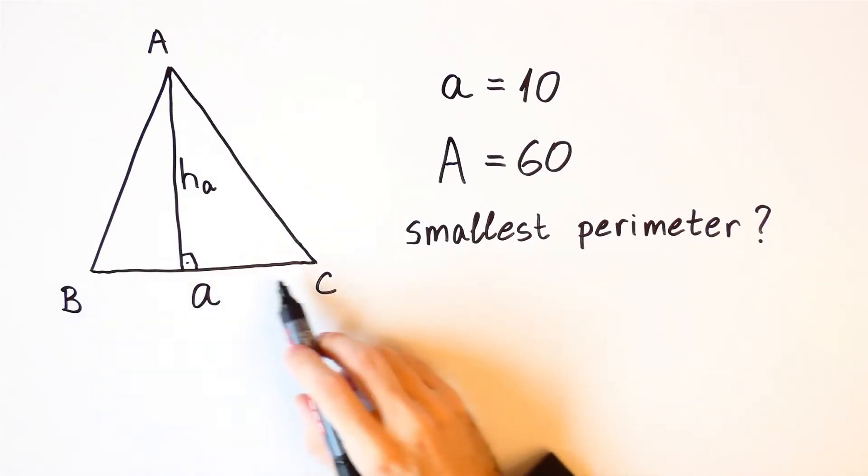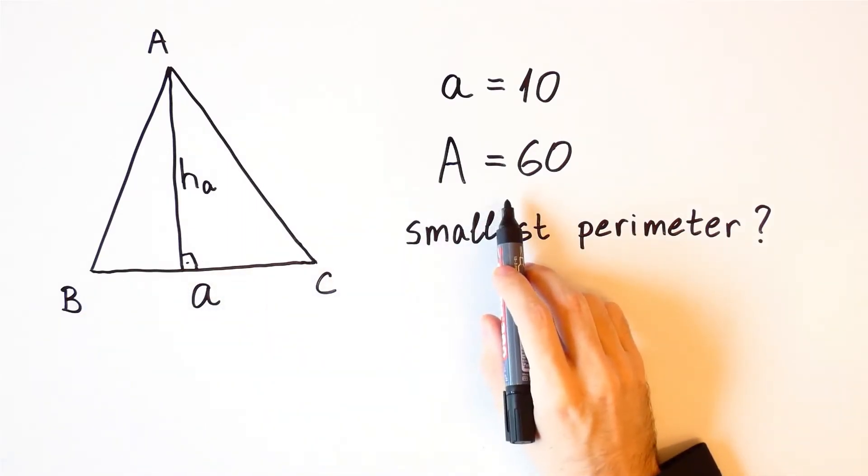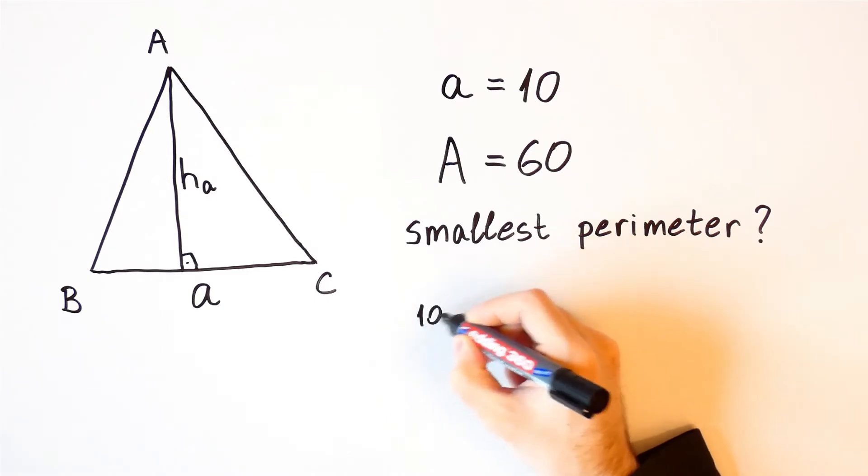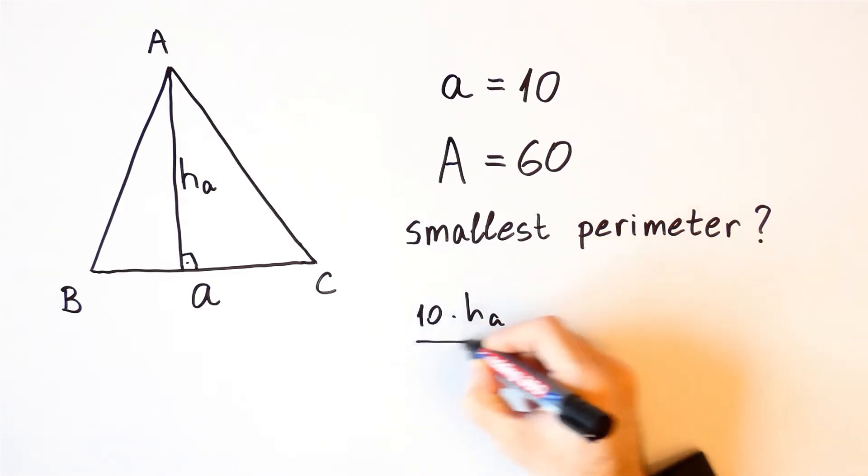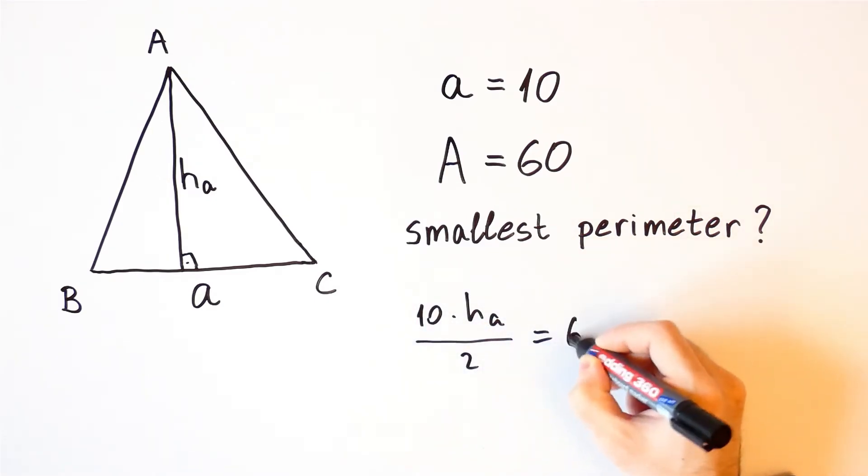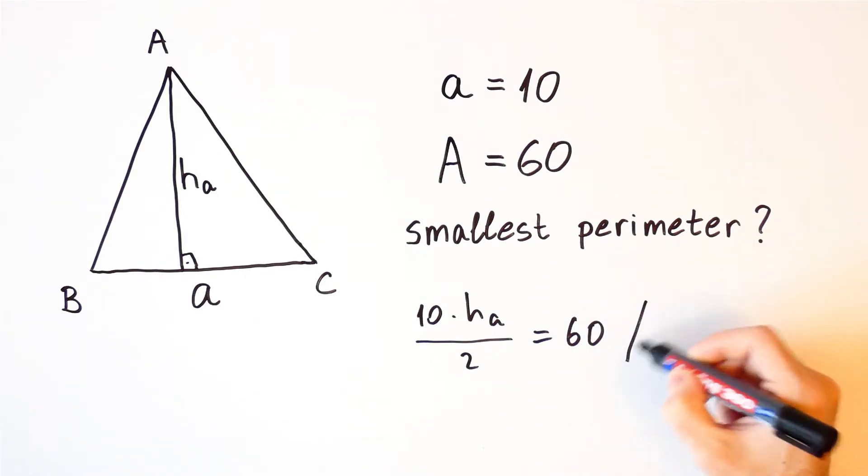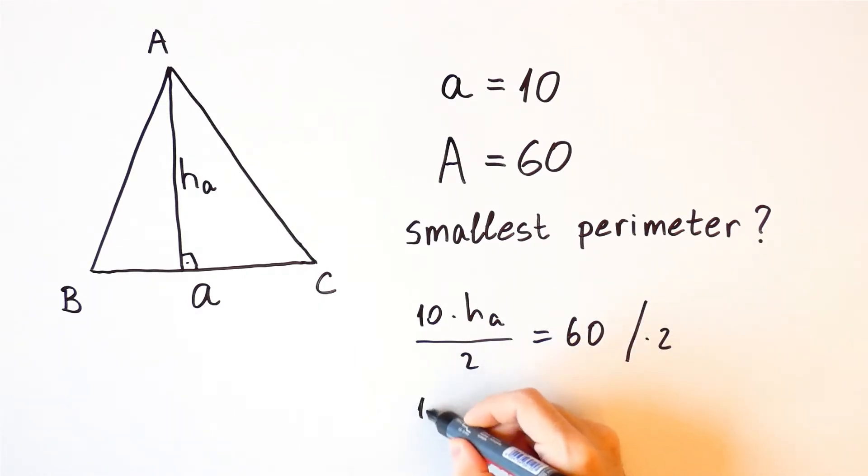In our problem this side is 10 and the area is 60, which means that 10 times ha over 2 is equal to 60. If we multiply both sides by 2 we get that 10 times ha is equal to 120, which means that ha is equal to 12.